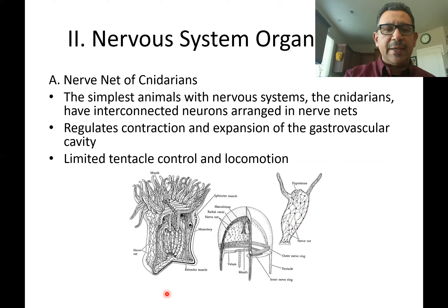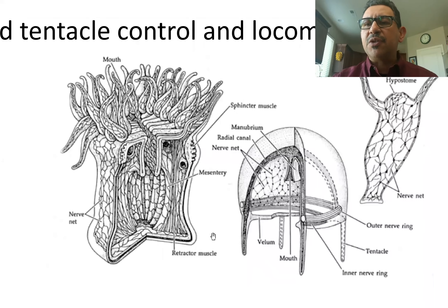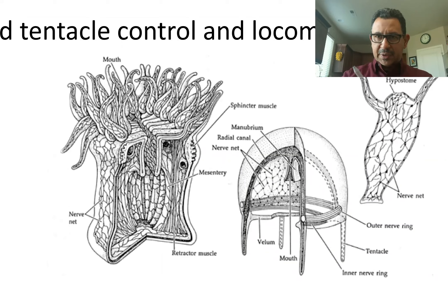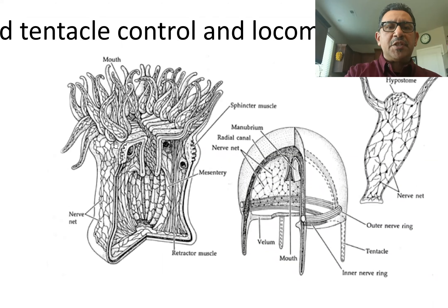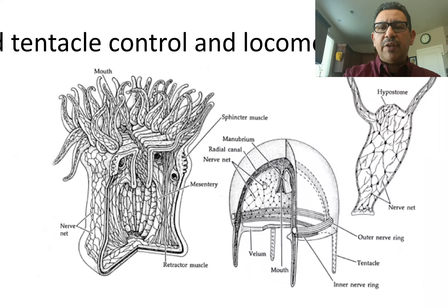Looking at this illustration, you can see the arrangement of nerve cells in a nerve net — neurons connecting with other neurons using dendrites and the neuron body, connecting with the axon terminal ends of adjacent or neighboring neurons. You can also see this extensive nerve net in something like an anemone, and also the nerve net inside the mesoglia of something like a jellyfish.